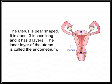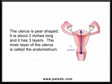The uterus is pear-shaped. It is about three inches long and has three layers. The inner layer of the uterus is called the endometrium.